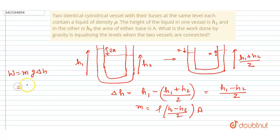Simply, the work done will be mass times g times Δh. Just put all the values: [(h₁ - h₂)/2]² × ρ × g × A. This will be our answer. Thank you.